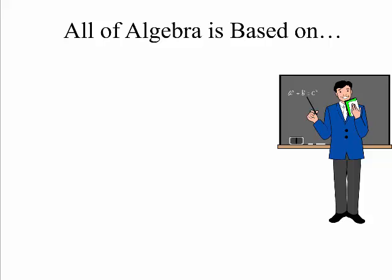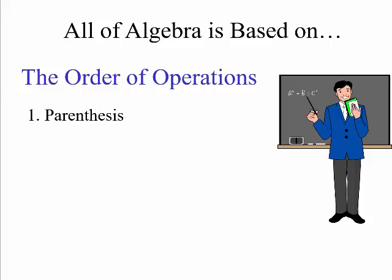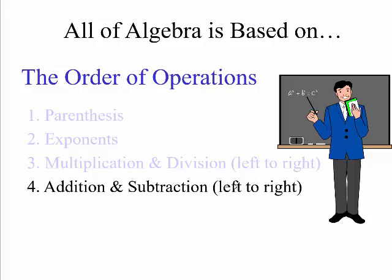All of algebra is based on what we call the order of operations. The order of operations follows these steps, always in order: if you have parentheses, start with parentheses first — simplify anything inside. After that, simplify anything with an exponent. Next, working left to right, do multiplication and division — these are at the same level, so if you see division before multiplication going left to right, you can do that first. Finally, do addition and subtraction left to right. This is PEMDAS.